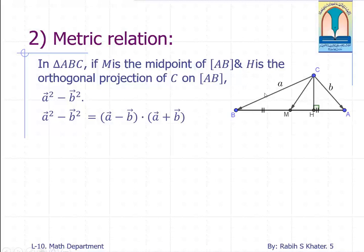What is A vector minus B vector? It's AB vector. Good. What's the sum of the vectors A and B? Good again. It's median and vector. It's double of the vector CM. Excellent.